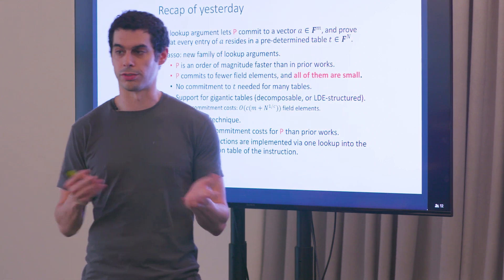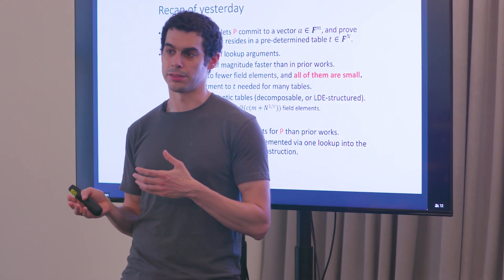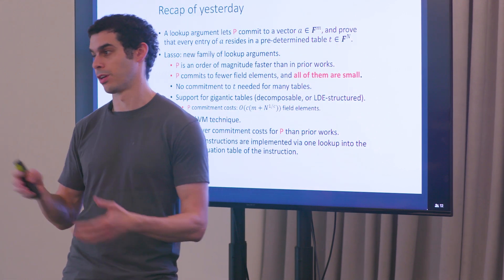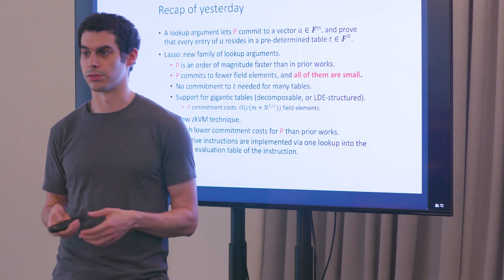So if the instruction takes two 64-bit inputs, the table actually has size 2 to the 128 because there are 2 to the 128 possible inputs to the instruction.